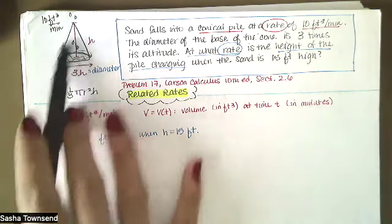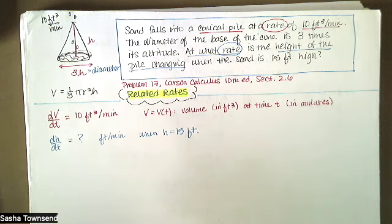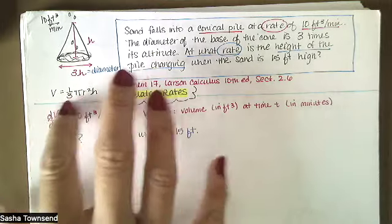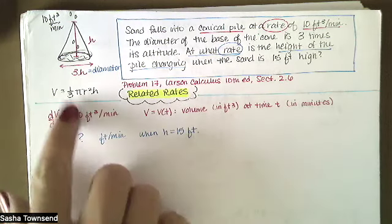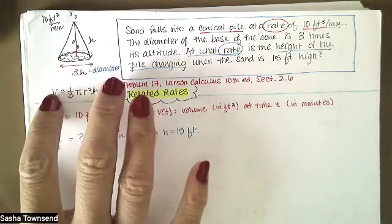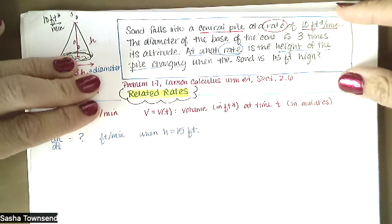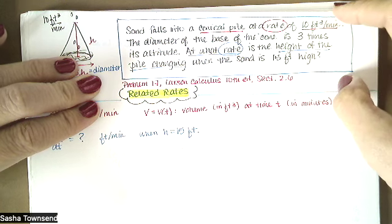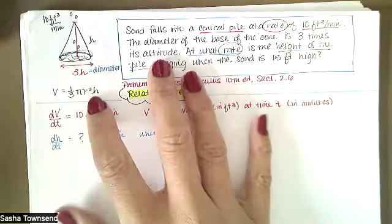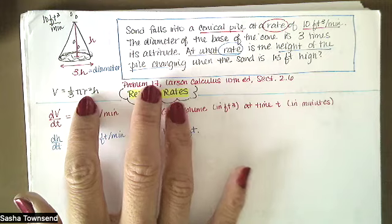If I know I'm dealing with a cone and I know how the volume and the height are related, I can find the relationship between those rates of change. I'll also need the equation that relates the radius and height of the cone to the volume. The book gives a hint that the formula for the volume of a cone is V = (1/3)πr²h. If it wasn't given, you could find it on the back cover of the textbook or look it up online.